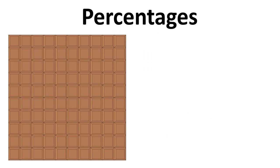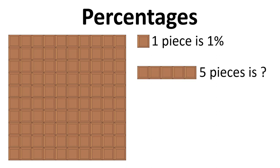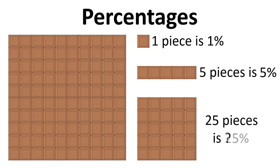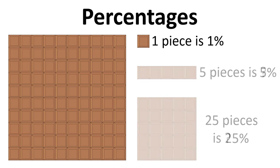the simplest way to think about this is if we have a chocolate bar with a hundred pieces, one piece of that chocolate bar is one percent. Five pieces, five percent, twenty-five pieces, twenty-five percent. So I think you get the picture there.